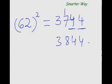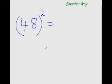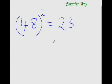Now what if the number we are trying to find the square of is less than 50? Just the same technique with a slight modification. What is the square of 48? As you can see, 48 is 2 less than 50. So instead of adding that 2 to 25, just subtract it: 25 minus 2 is 23, and the square of 2 is 4, so put 04 here — that's your answer.